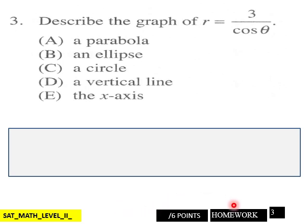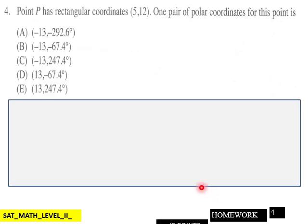That is six points for page three. Page four: point P has rectangular coordinates of 5 and 12, one pair of polar coordinates for this point.